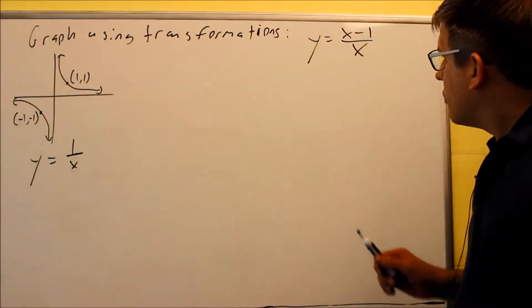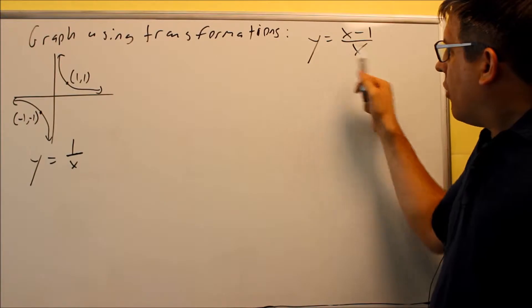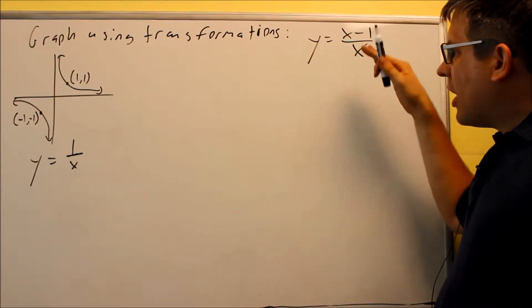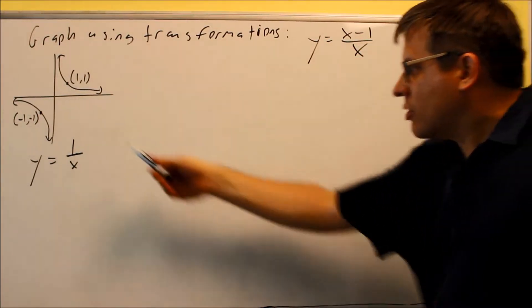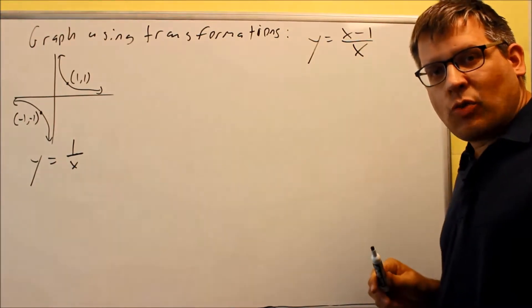We have another one that we're going to be graphing by using transformations. Now, this particular one does not look like any of our base graphs. It doesn't look like 1 over x or 1 over x squared.